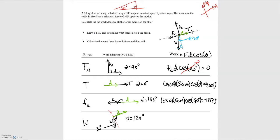For weight: weight equals mg, so that's 490 newtons, times 50 meters, times cosine of 120 degrees. Cosine of 120 degrees equals negative one half, so the work done by gravity is negative 12,250 joules.